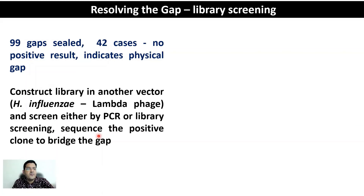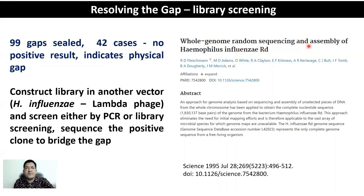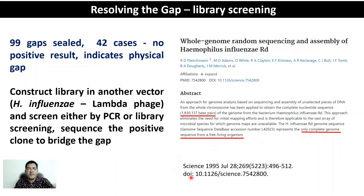Finally, the complete sequence of Haemophilus influenzae was obtained and published in 1995. The paper is entitled 'Whole Genome Random Sequencing and Assembly of Haemophilus influenzae Rd.' The sequenced genome size was 1,830,137 base pairs, or 1.8 megabases — the only complete genome sequence from a free-living organism at that time. It was published in Science, July 28, 1995, pages 496–512, and has a digital object identifier for accessing the online version.